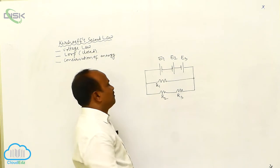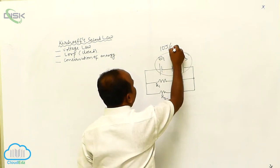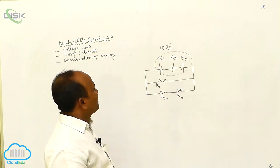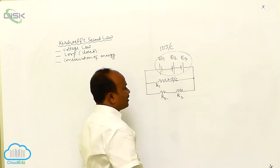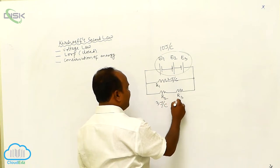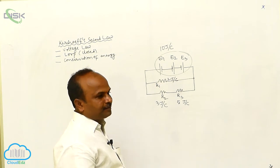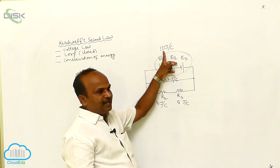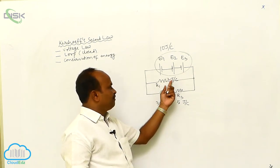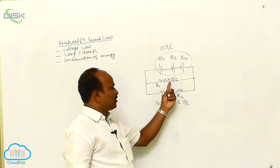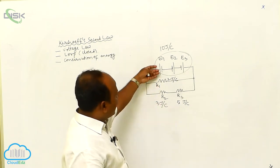According to the conservation of energy, whatever energy is supplied by the cell is equal to the energy utilized by the utilizers. For example, the total energy supplied by the cell is 10 joules per coulomb — for every coulomb of charge, 10 joules are supplied. This resistor may utilize 2 joules per coulomb, another 3 joules per coulomb, and another 5 joules per coulomb. Adding these three: 2 + 3 + 5 = 10 joules per coulomb.